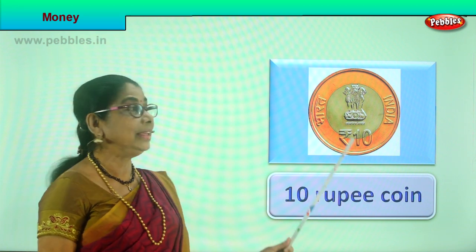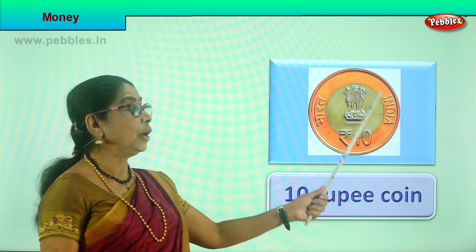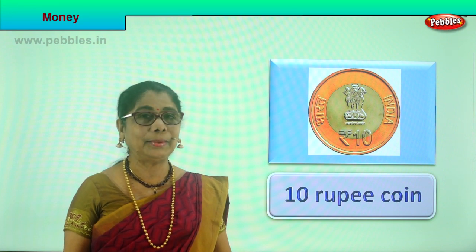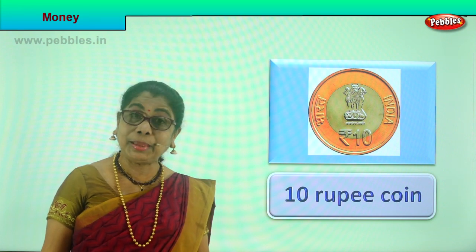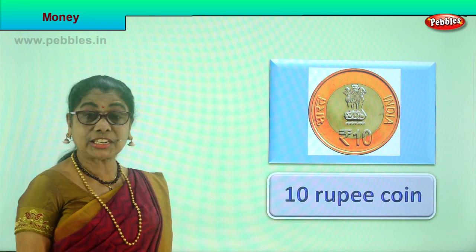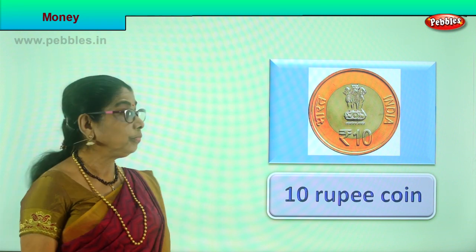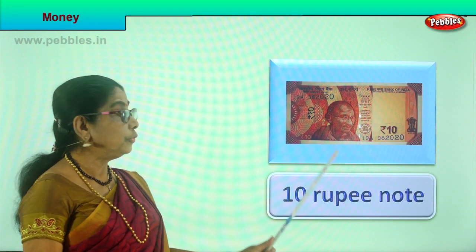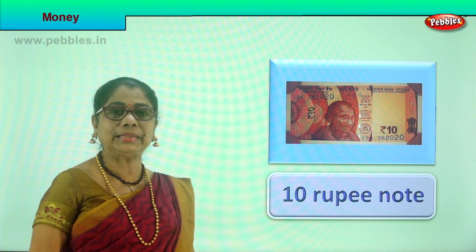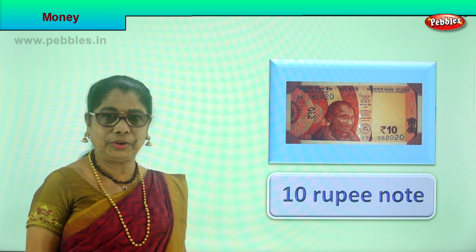Ten rupees is the highest value coin — it's big, heavy, and golden in color. Now shall we look at the paper currency? The paper money and the value of each. Ask mummy to show you all four coins, place them, and look carefully.